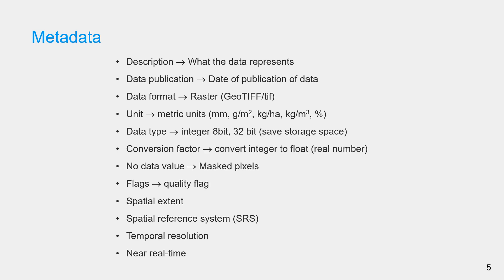The data type is often integer for saving storage space and faster downloading speed. Therefore, a factor or multiplier is needed to convert the data into a float data type. No data value indicates the grid cells or pixels with no estimations, and thus needs to be masked.